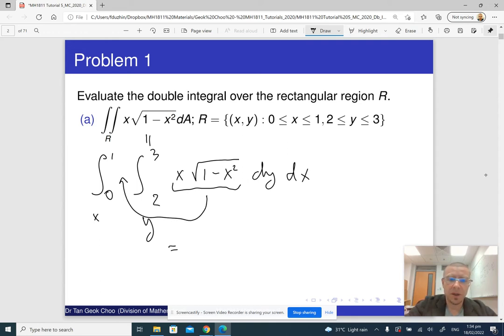So, which means that this is really the integral from 0 to 1, x square root of 1 minus x squared dx times the integral from 2 to 3, 1 dy. Well, and this part is really 3 minus 2 times 1, which is just 1.